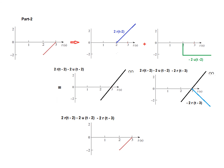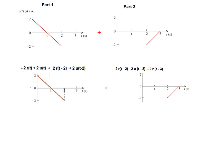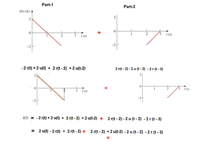The total function is the summation of part 1 and part 2. Rearranging: we have 2r(t-2) from part 1 and 2r(t-2) from part 2, giving 4r(t-2). The terms 2u(t-2) and -2u(t-2) cancel. So the final result is: -2r(t) + 2u(t) + 4r(t-2) - 2u(t-2) - 2r(t-3). I hope you enjoyed this.